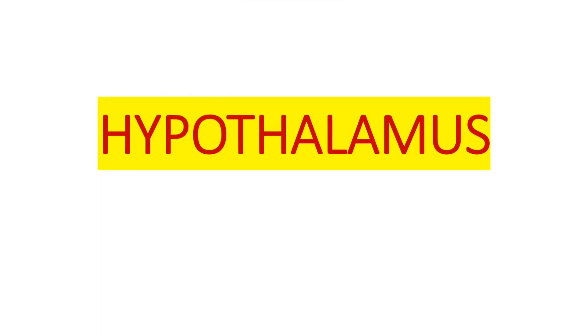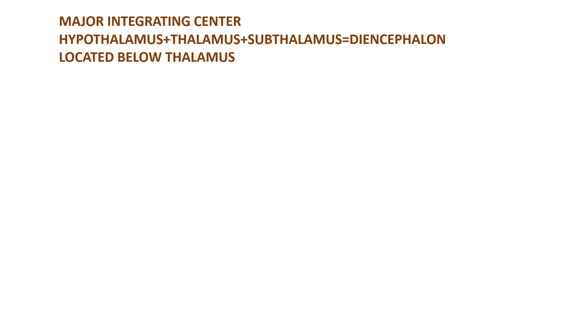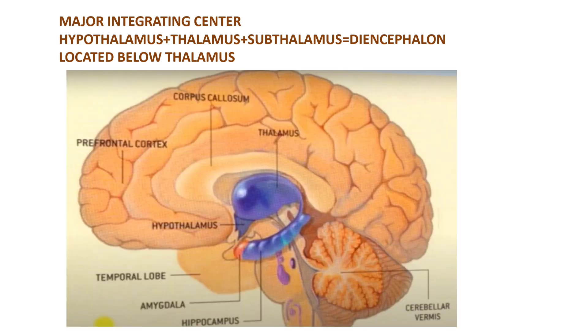Hello everyone, welcome to Vijay Shri E-Tutorials. I am Anakha Yaldos from the 2017 batch. In this video we are going to discuss about the Hypothalamus — a major integrating center in our brain. 'Hypo' means below, so hypothalamus is located below the thalamus. Hypothalamus, thalamus, and subthalamus together form the diencephalon. As seen in the sagittal section of our brain, hypothalamus is located below the thalamus.